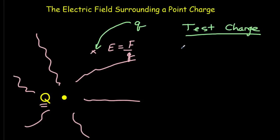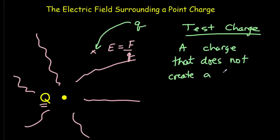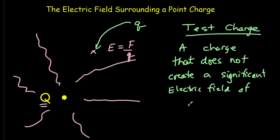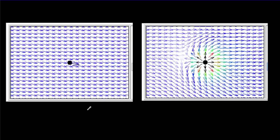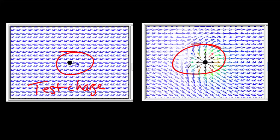A test charge is a charge that does not create a significant electric field of its own. What you're seeing in front of you is one diagram that represents a test charge and one that is not. The blue lines represent the electric field. The one that is not affecting the electric field is the test charge. The other one, which has an effect on the electric field, is not a test charge.